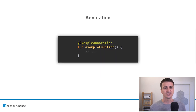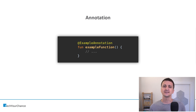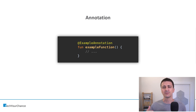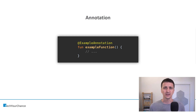An annotation is a language construct. It starts with this @ symbol and in this case it sits on top of this function — it basically annotates the function. But annotations are not limited to functions; you can use them with parameters, with properties, with fields, with entire classes, etc. So this is an annotation.